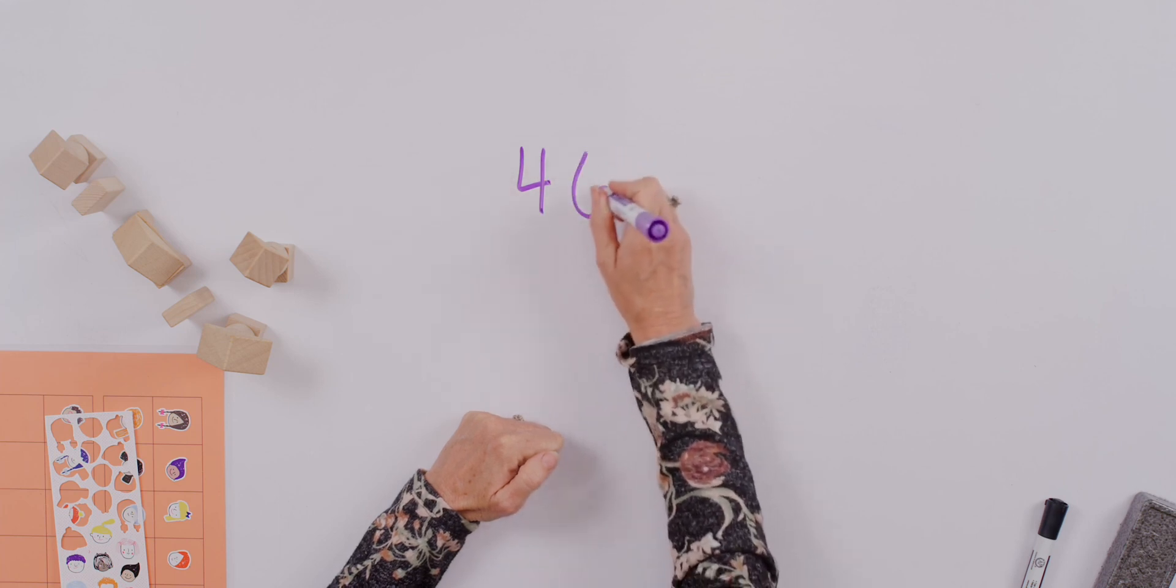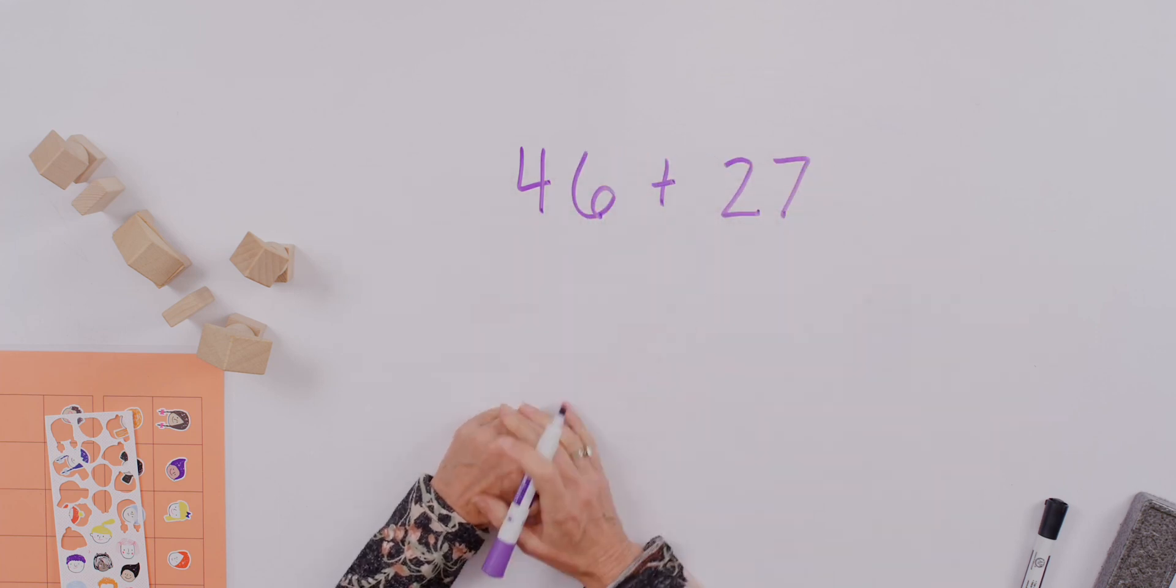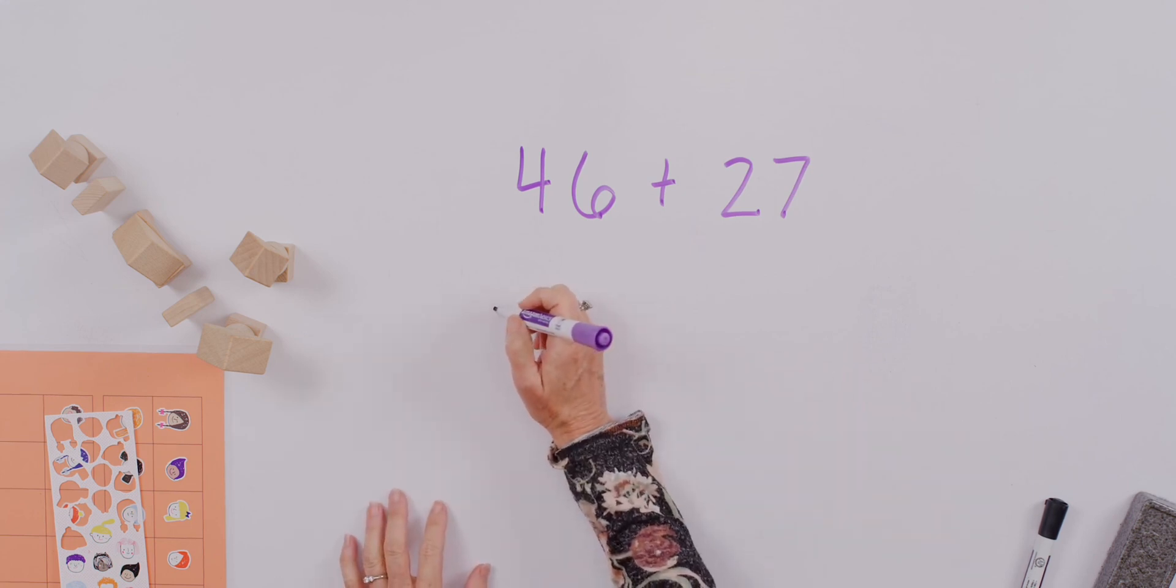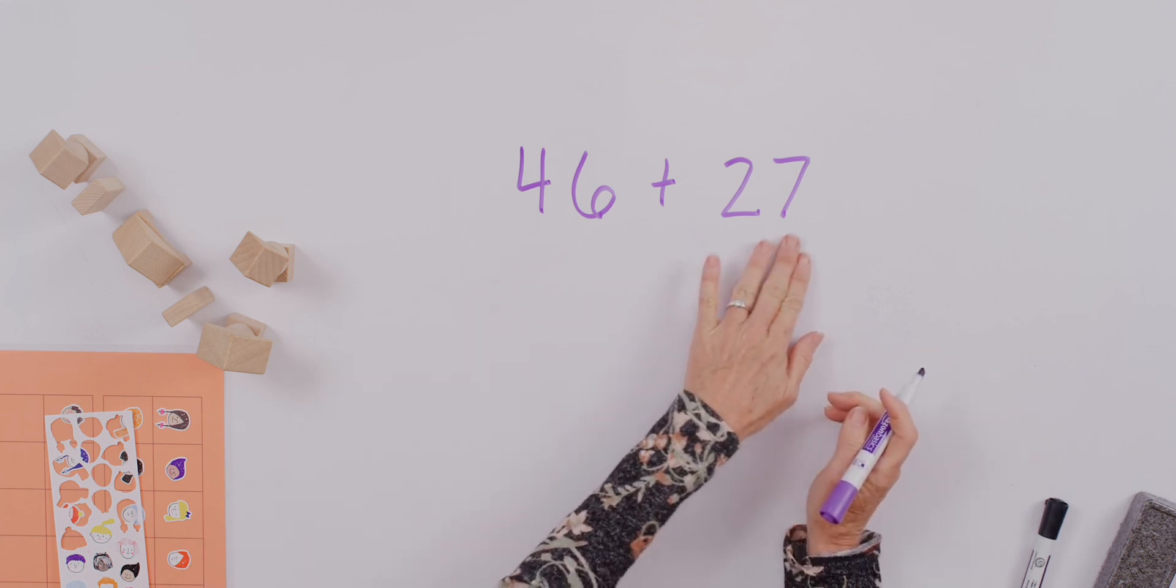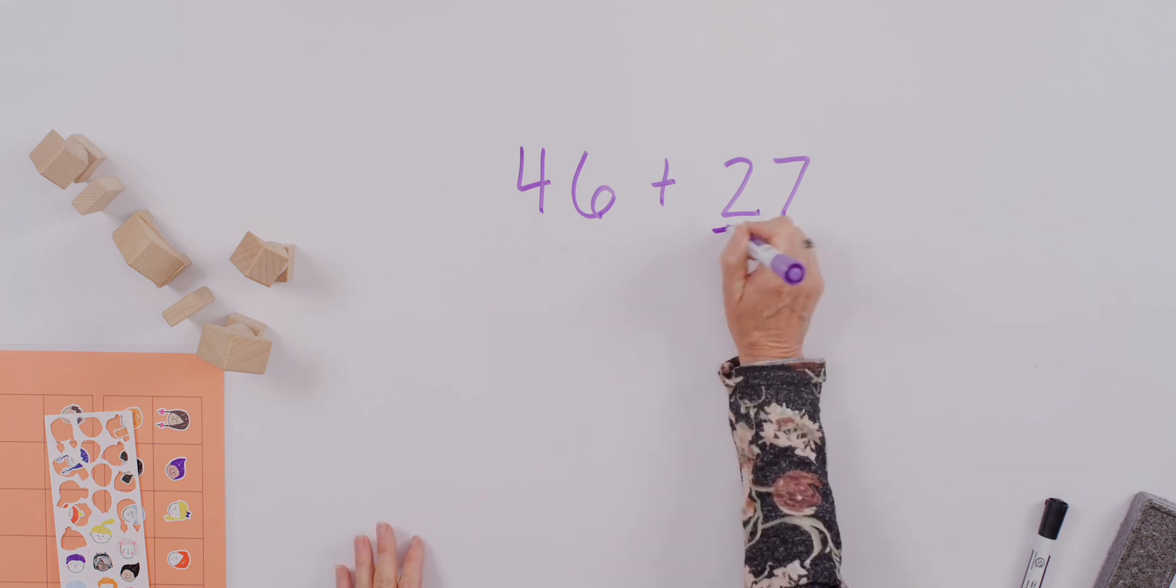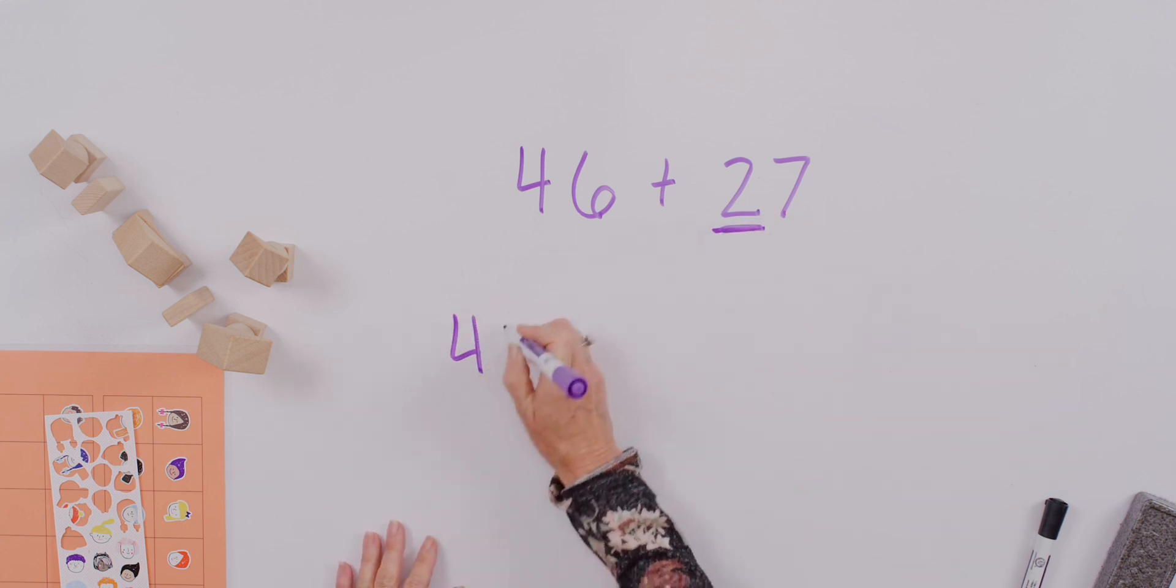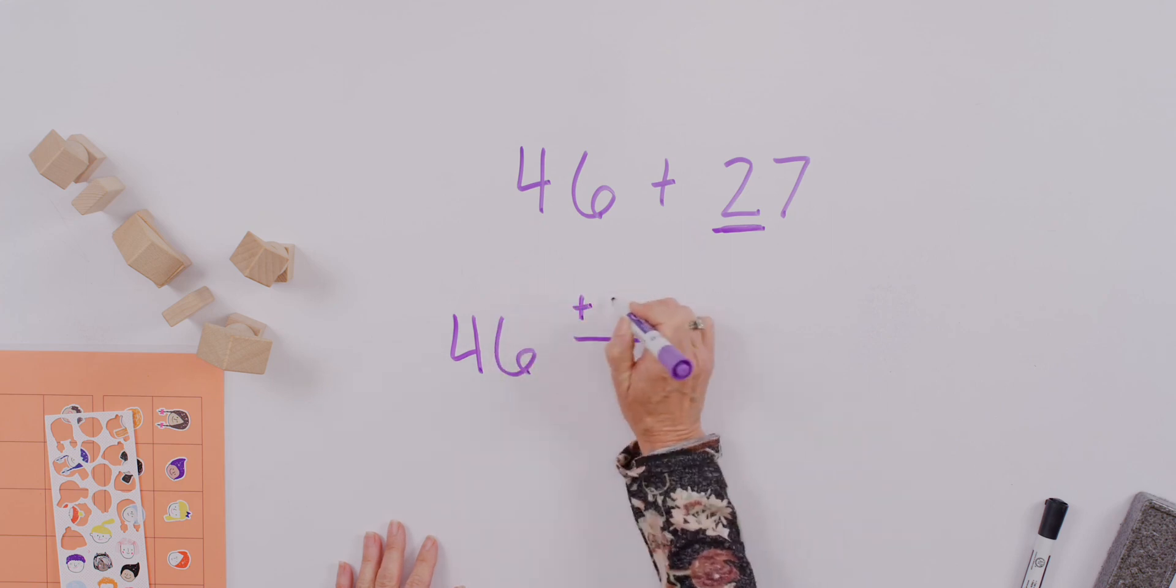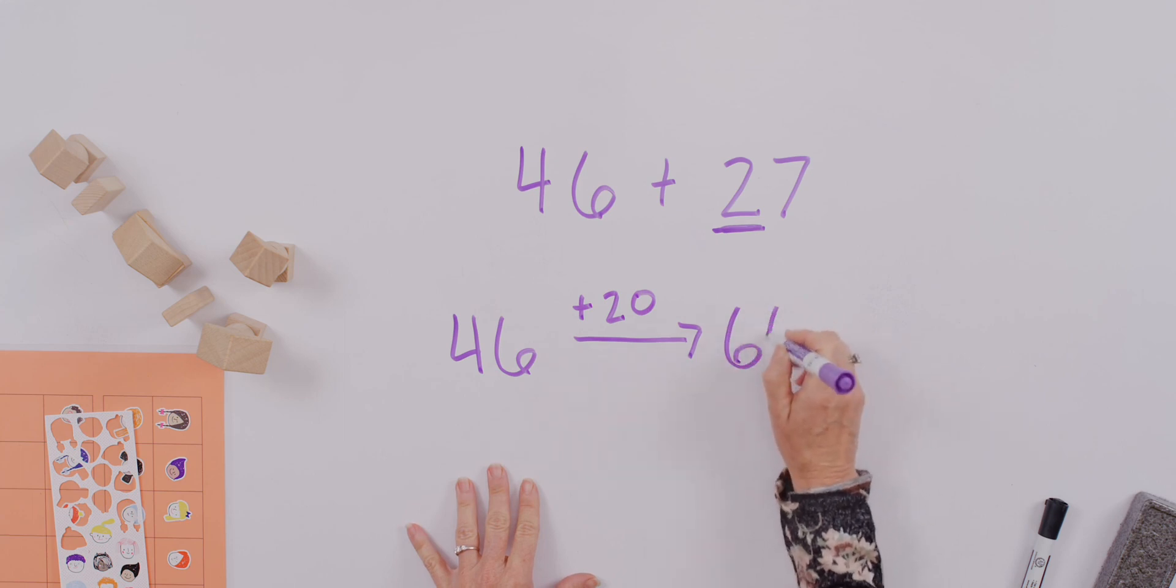Let's try forty-six plus twenty-seven. Now, in this case, I really like to use the strategy where we recognize that we want to work with this number. Let's work with our tens first. So let's work with the two tens. So we can say forty-six, and use this little arrow, plus two tens, or we can call that twenty. So forty-six plus twenty gives us sixty-six.